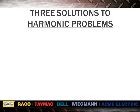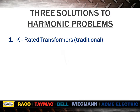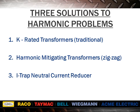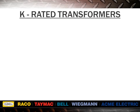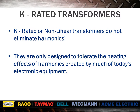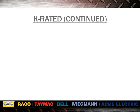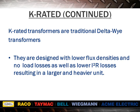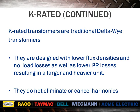There are three solutions to harmonic problems: k-rated transformers, harmonic mitigating transformers, and I-TRAP neutral current reducer. K-rated or non-linear transformers do not eliminate harmonics; they are only designed to tolerate the heating effects of harmonics created by much of today's electronic equipment. K-rated transformers are traditional delta-Y transformers designed with lower flux densities and no-load losses, as well as lower I²R losses, resulting in a larger and heavier unit. They do not eliminate or cancel harmonics.